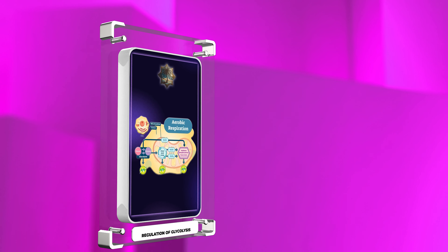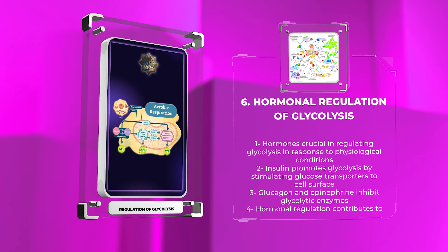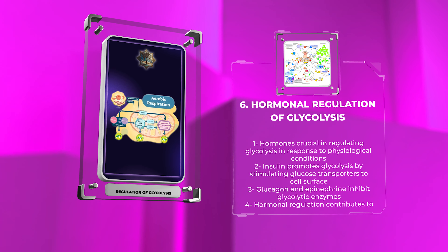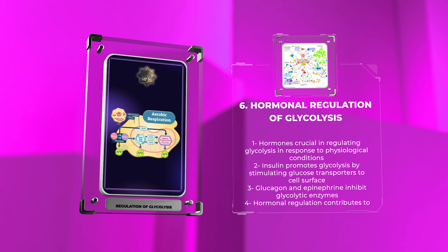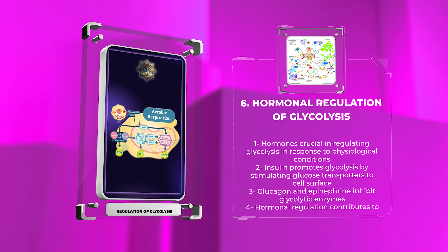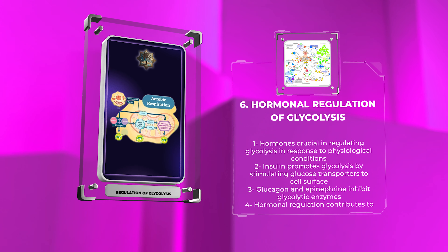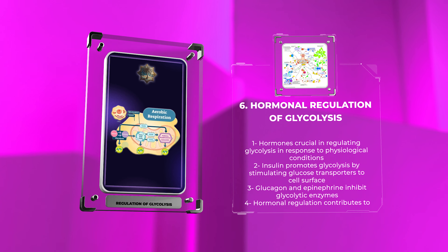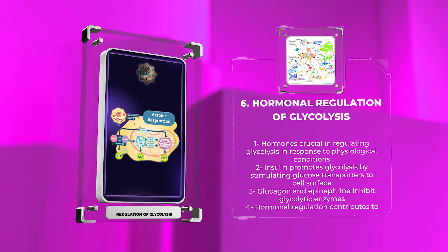Hormones play crucial roles in the regulation of glycolysis, orchestrating energy metabolism in response to physiological conditions. Insulin, the primary hormone responsible for glucose uptake and utilization, promotes glycolysis by stimulating the translocation of glucose transporters, GLUT4, to the cell surface. Conversely, hormones such as glucagon and epinephrine activate cellular signaling pathways that lead to the inhibition of glycolytic enzymes. These hormonal regulations contribute to maintaining glucose homeostasis, particularly during fasting or stressful situations.